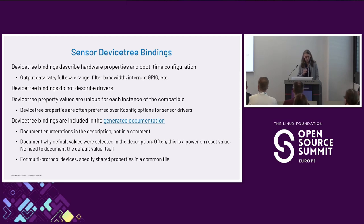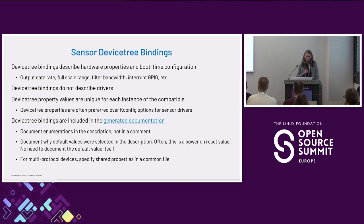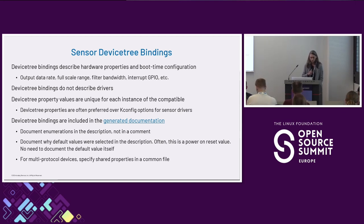It's important to remember that device tree bindings don't describe the drivers — they're actually used by the drivers. A common mistake is that even though there's often a one-to-one relationship between a binding and a driver, the binding isn't dependent on the driver — it goes the other way around. Device tree property values are unique across each instance of the compatible, so if you have multiple instances in your tree, those property values can be different. For example, you could configure two accelerometers with different output data rates, or on different I2C or SPI buses. This leads to device tree properties often being preferred over Kconfig options for sensor drivers.